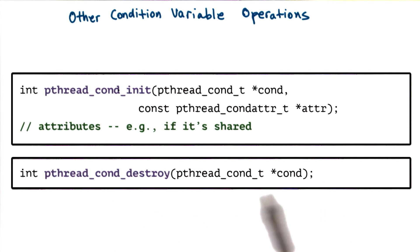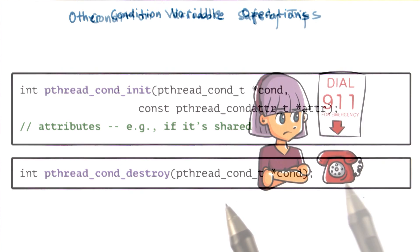Just like threads, condition variables should be explicitly freed and deallocated. We use the condition destroy call for that.